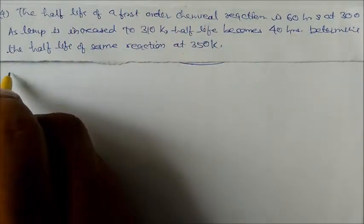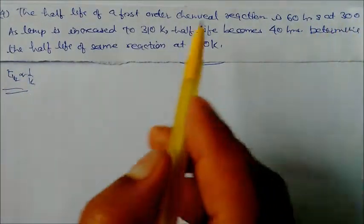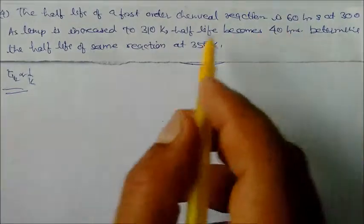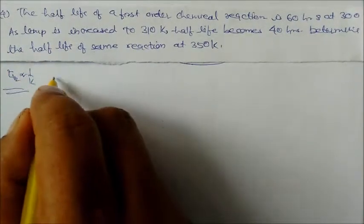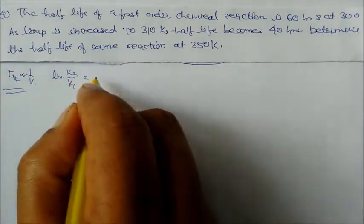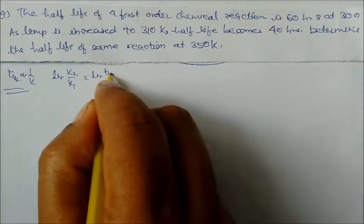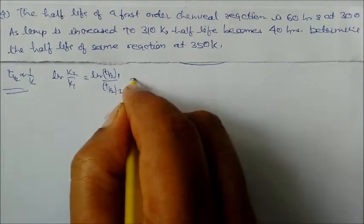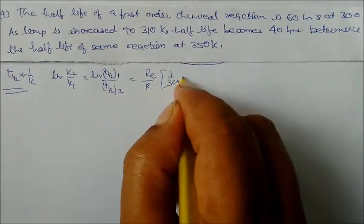Since half-life is inversely proportional to the rate constant, we write ln(K2/K1) in terms of half-lives: ln(t½₁ / t½₂) = EA/R × (1/300 minus 1/310). With t½₁ = 60 hours and t½₂ = 40 hours, we get ln(60/40) = EA/R × (1/9300).